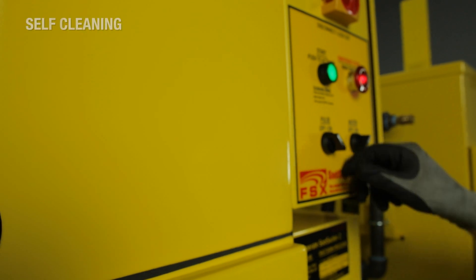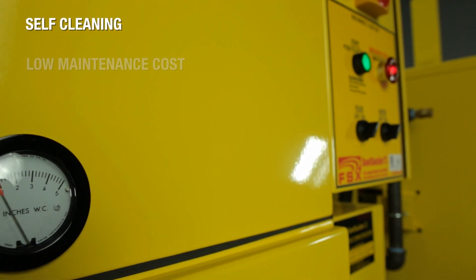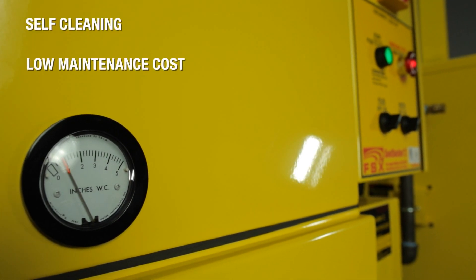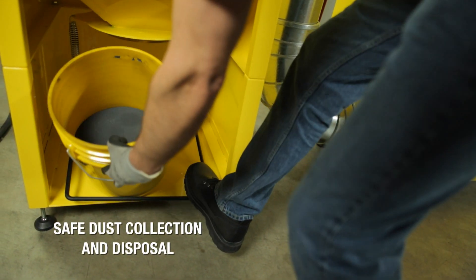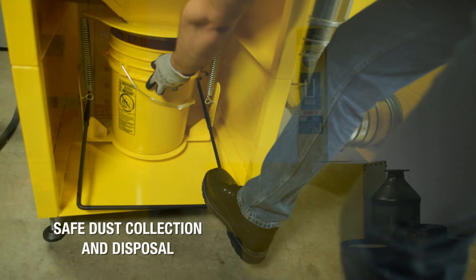The Soot Sucker Dust Collector is a two-stage filtration system housed with a primary and HEPA filter. The self-cleaning system prolongs the primary filter life, keeping maintenance costs low. The safe removal of soot and ash is made simple with the Soot Sucker Quick Change Bucket System.